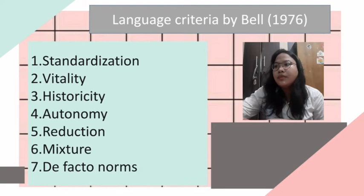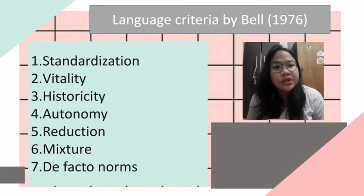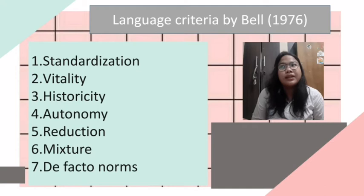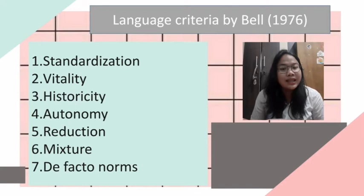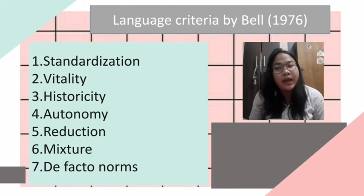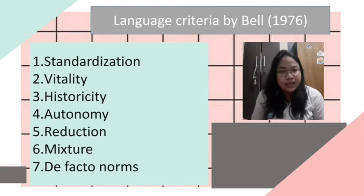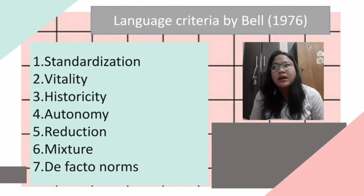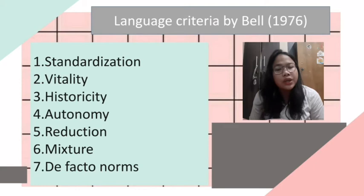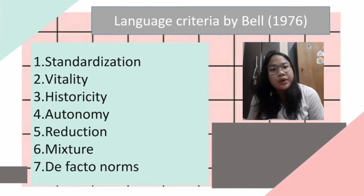The first criterion is standardization — a language must have a dictionary and spelling books. Vitality means there is still a living speaker that speaks that language. Historicity means it has a historical background. Autonomy is about feeling — a language must be felt by its speakers as different from other languages. Reduction refers to the fact that a particular variety may be regarded as a sub-variety rather than an independent entity. Mixture refers to the speaker's feeling about the purity of the language. And finally, de facto norms — there are good speakers and poor speakers, and the good speaker should represent the norms of proper usage of that language.